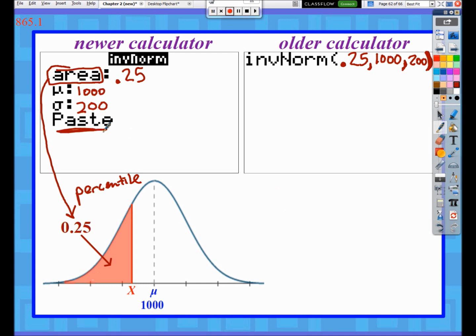Standard deviation is 200, so put in 200 and then close parenthesis. Newer calculator people, when you hit paste, you're going to see exactly what the older calculator people see. When you press enter, you're going to get an answer, again to four significant digits, of 865.1. That particular score that would put you in the 25th percentile is approximately 865.1.